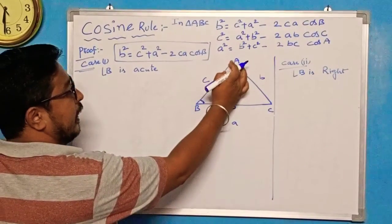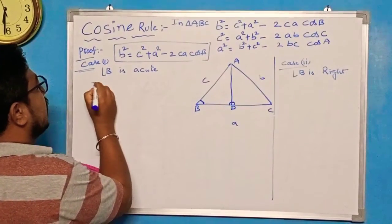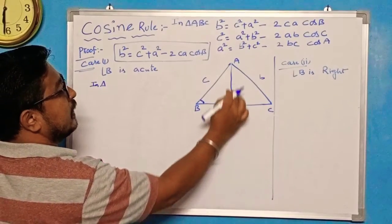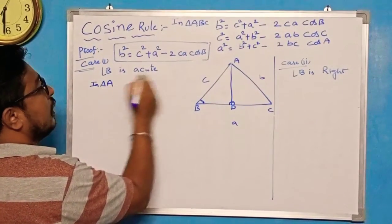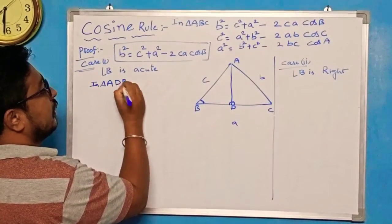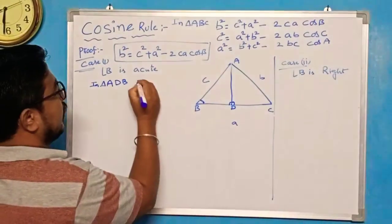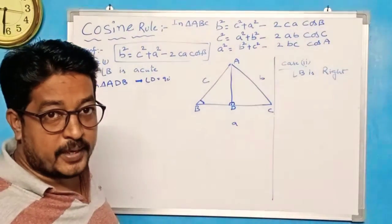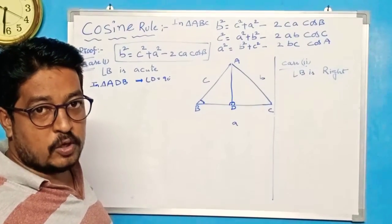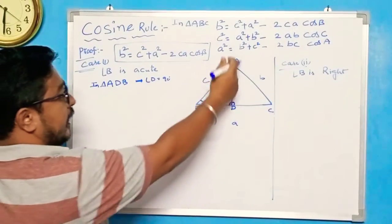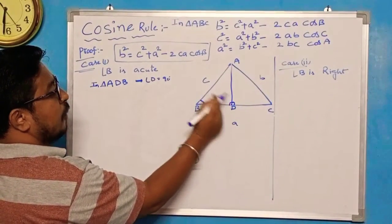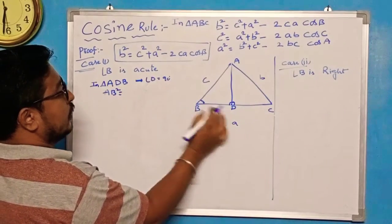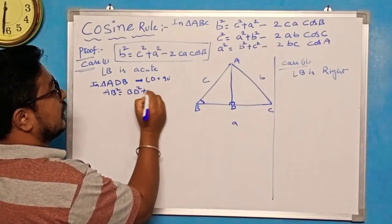Now in triangle ADB, angle ADB is a right angle at D. We have the Pythagorean property: hypotenuse squared equals side² + side². So AB² = BD² + AD², which gives AD² = AB² − BD².